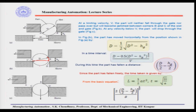This is d/2 — the part has moved up to d/2, where d is the diameter of the gate or the part. From the Pythagorean relation, this can be given as: this square equals this square plus this square. From here we find that the horizontal distance d/2 equals d minus half of the square root of (d² minus hg²).